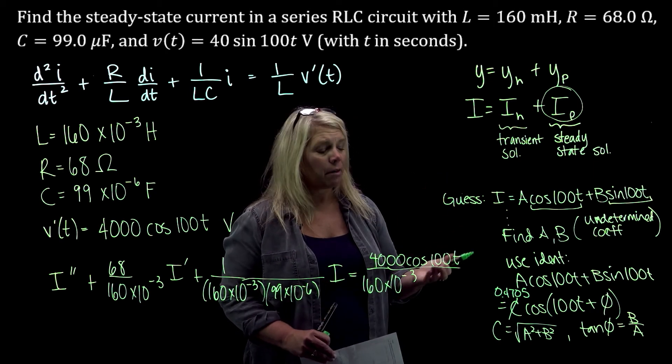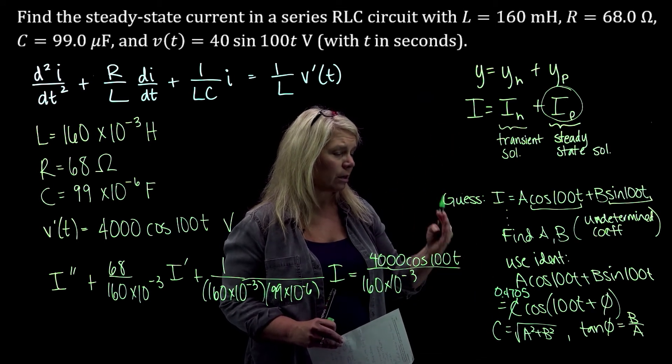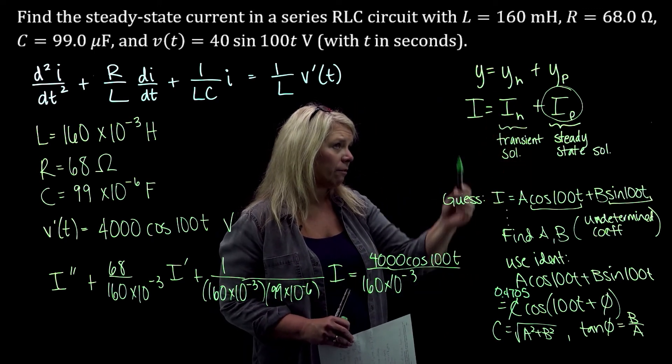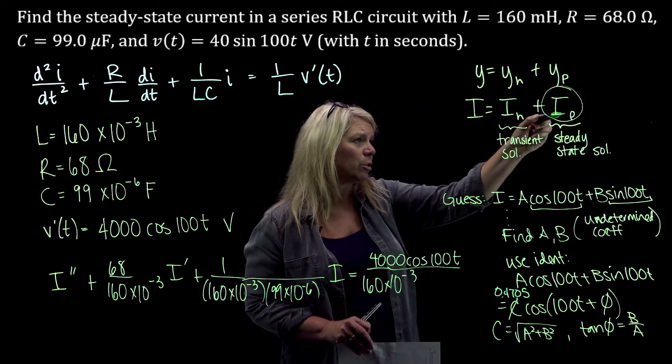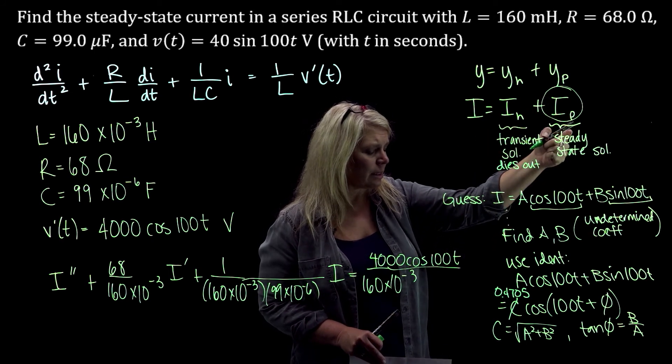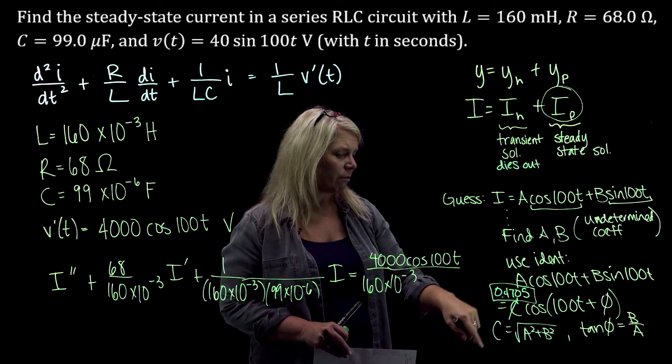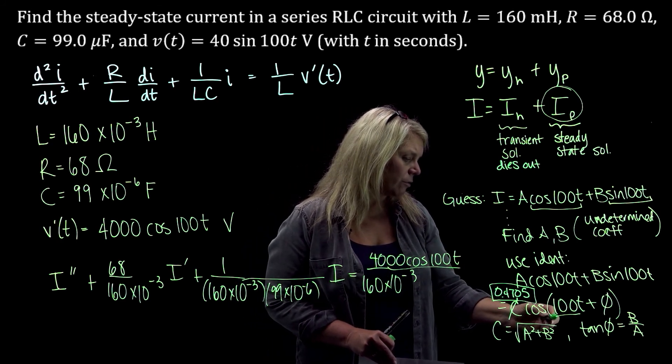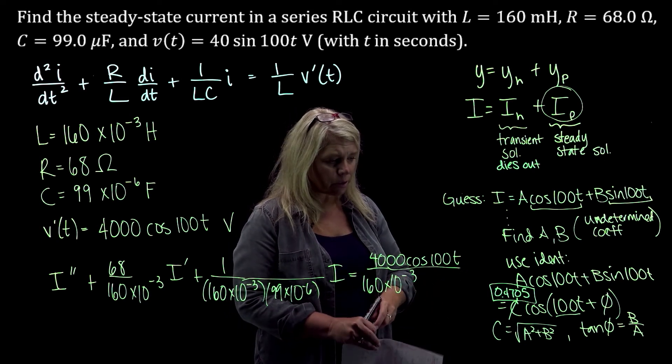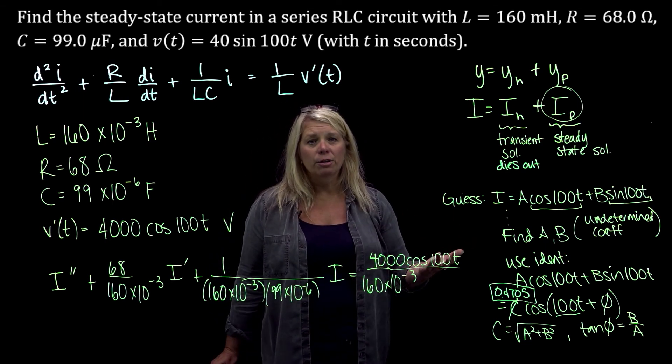All right, so you can think about the eventual behavior of this system, even without churning through all those other calculations. You don't necessarily need to find this in order to answer the question. I can figure out that eventually the current approaches this I_p. This part dies out. So eventually the current approaches this steady state solution. And we've got an amplitude of 0.475. And we've got a period of 2 pi over 100, or a frequency of 100 over 2 pi.